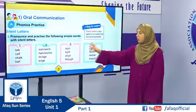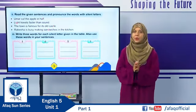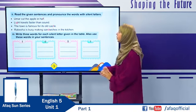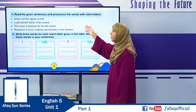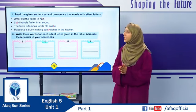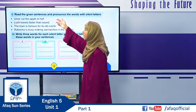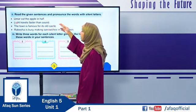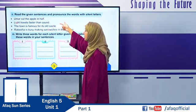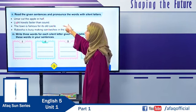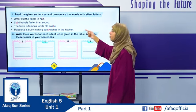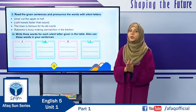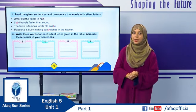In the previous activity we read isolated words with silent letters. Now let's read some sentences using those words. First: Umar cut the apple in half — L is silent in 'half.' Second: Light travels faster than sound. Third: The town is famous for its old castle. Fourth: Rabiha is busy making sandwiches in the kitchen — we do not say 'sandwich-es' with a D sound; D is silent in 'sandwich.'